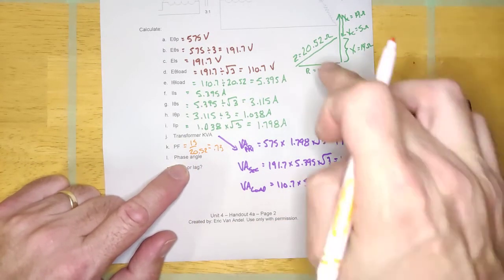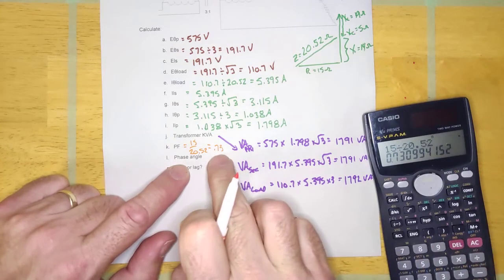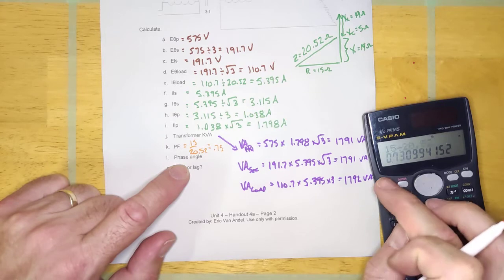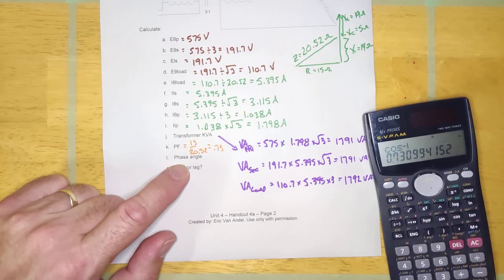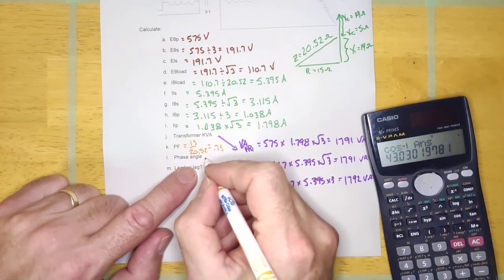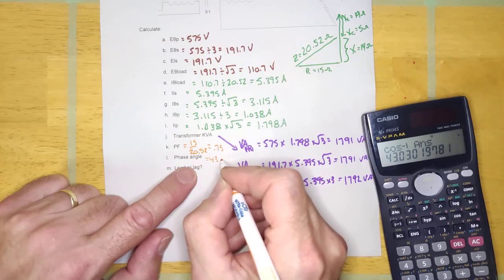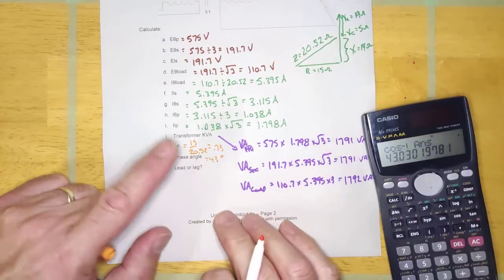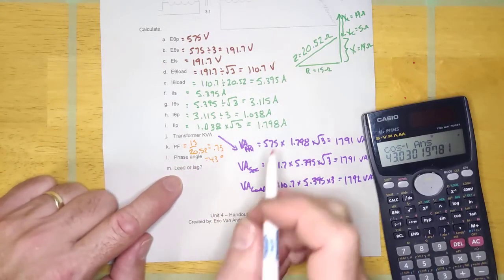Phase angle. Well, it looks like it's going to ask for it. So, I can hit shift cos. And, you know, I'm going to do that, I think. Shift cos. Looks like it's 43 degrees. But, I know, opposite over adjacent, inverse tan. That'll work, too. Whatever you want.